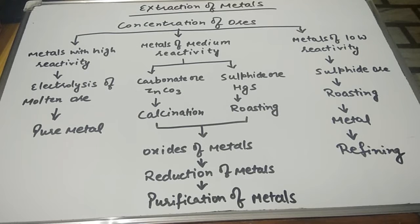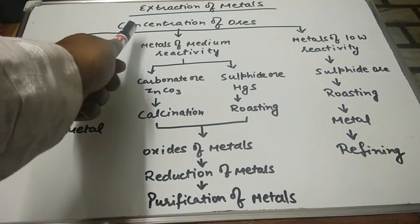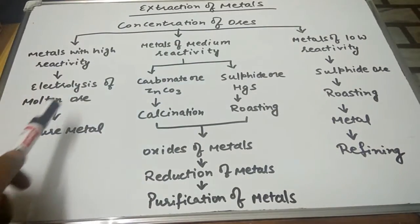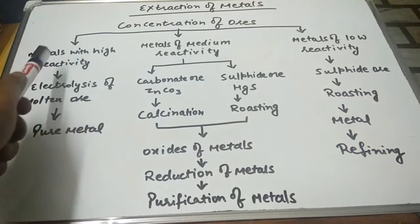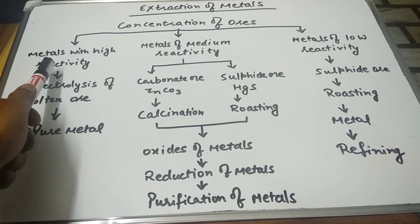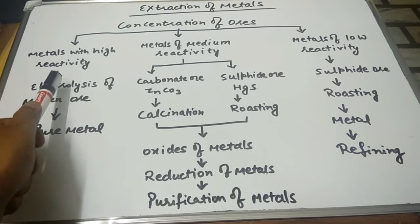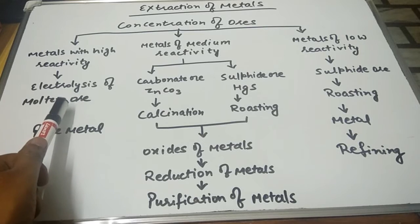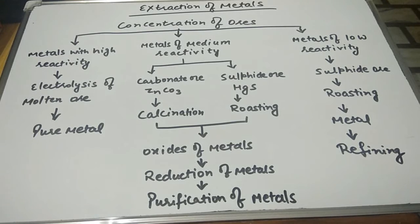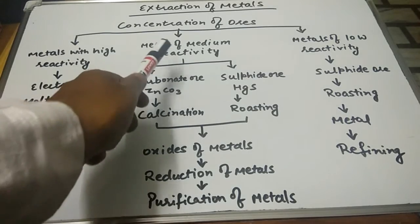I have given a chart, or you can say a blueprint, of extraction of metals. At the top, I have mentioned concentration of ores, which has three parts. In the first part, the metals with high reactivity will go through the process of electrolysis, and afterwards we are getting pure metal from it.